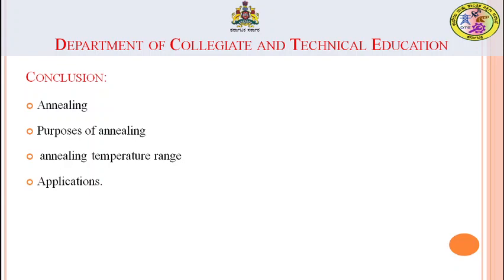In process annealing, we heat the steel parts to a temperature below the critical temperature, and then allow it to cool. In full annealing, we heat the steel parts 30 to 50 degrees Celsius above the critical temperature, hold it for some time, and then allow it to cool in the furnace.